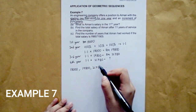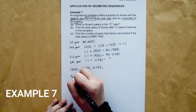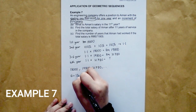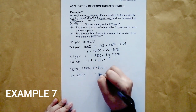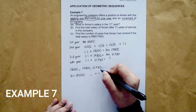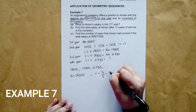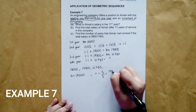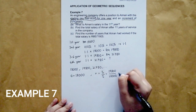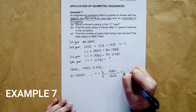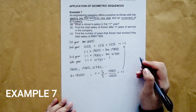Based on this sequence, we can extract the key information. The value of a equals RM18,000. We can find the common ratio r by taking the second term divided by the first term: RM19,800 divided by RM18,000, which gives r equals 1.1.